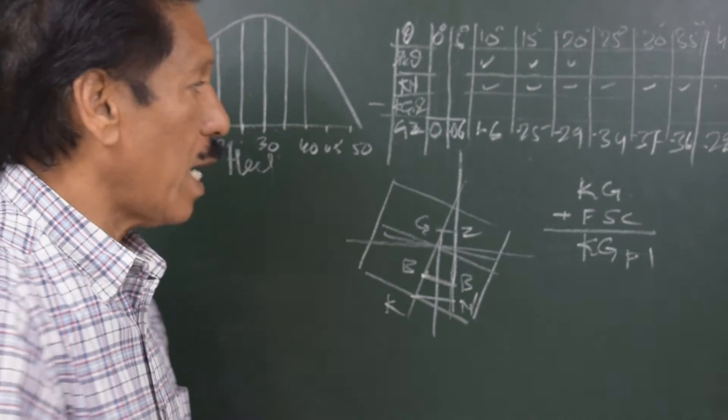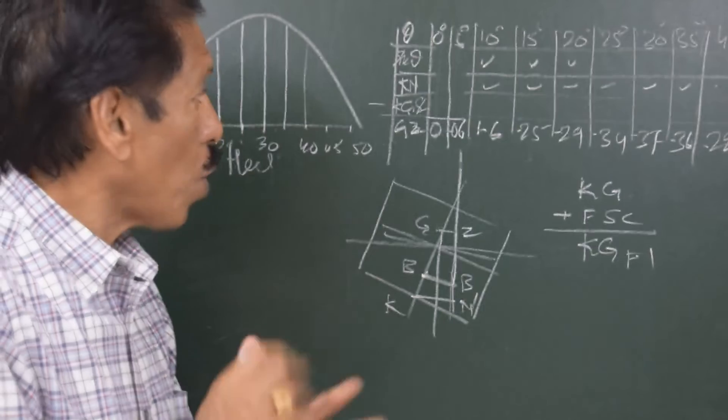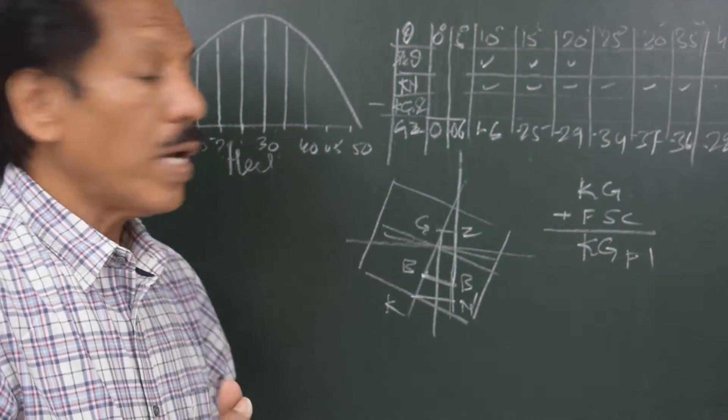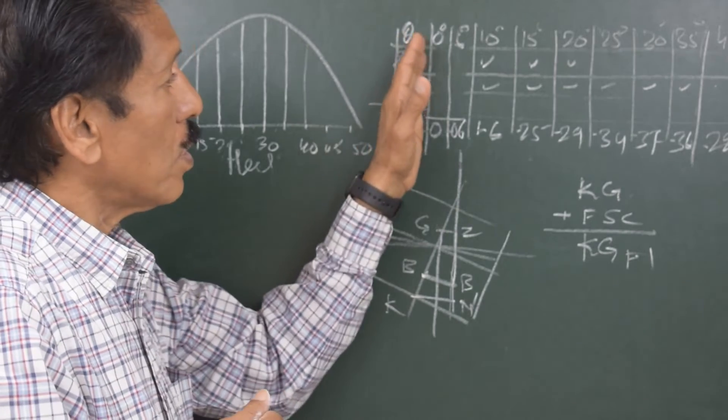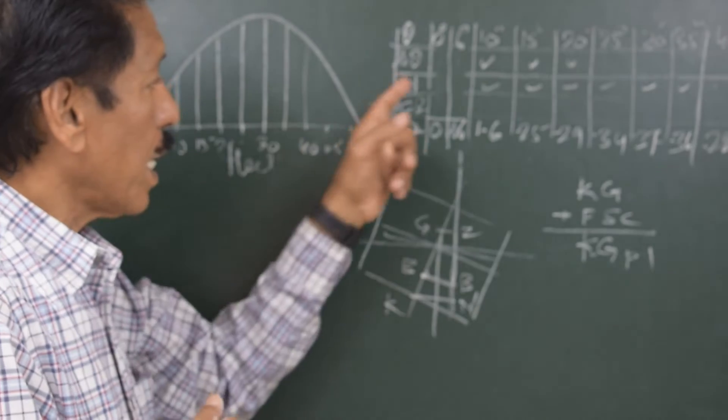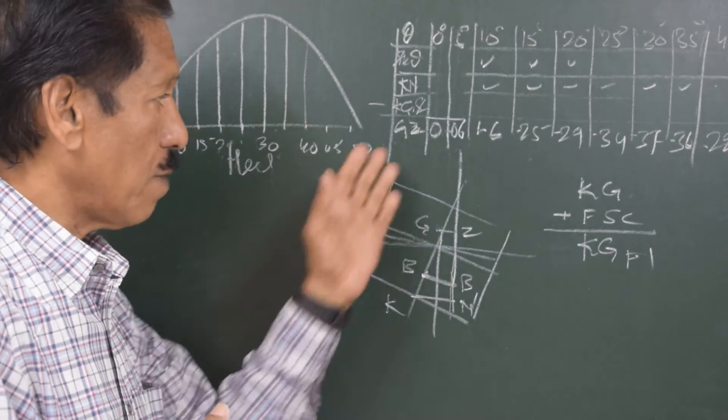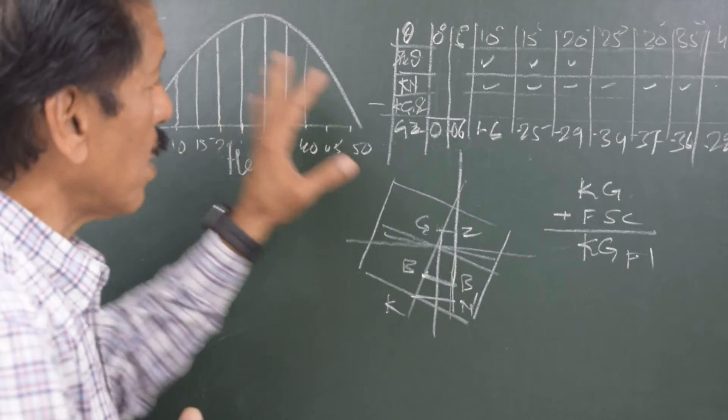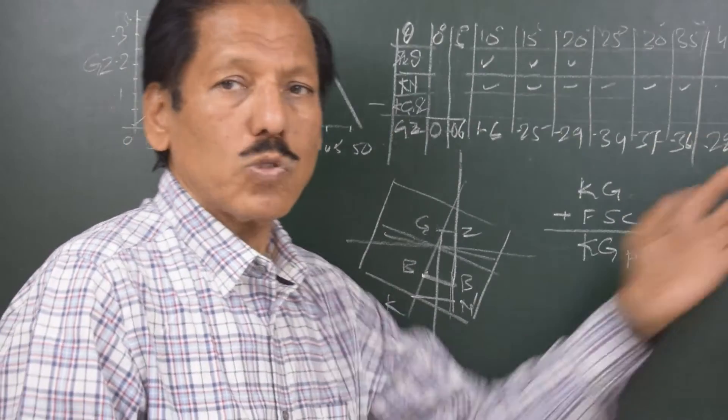We have to understand how the calculations are done. So I hope this is clear that we write down the ordinates for 0 to 40 degrees. These ordinates that are picked up from the table are KN. KN minus KG fluid sine theta gives you righting lever and the values are like this. That means this curve that is drawn is in conformance with these values.